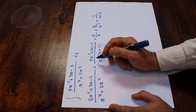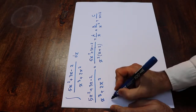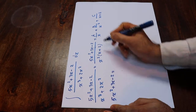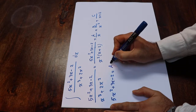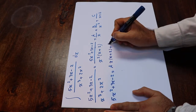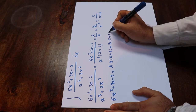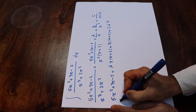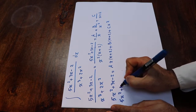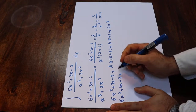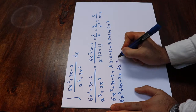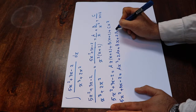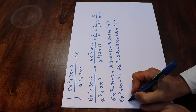Now, doing the algebra, 5x² + 3x - 2 equals A·x·(x + 2) + B·(x + 2) + C·x², which expands to ax² + 2ax + bx + 2b + cx².